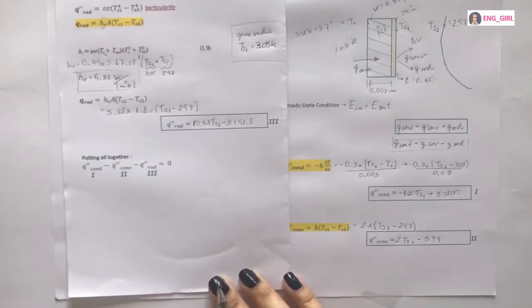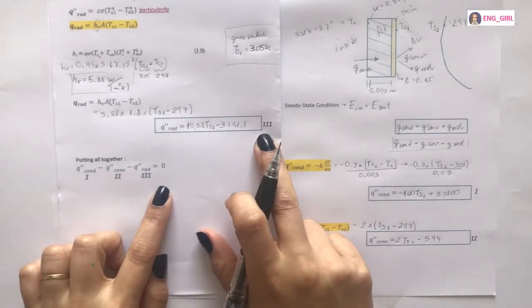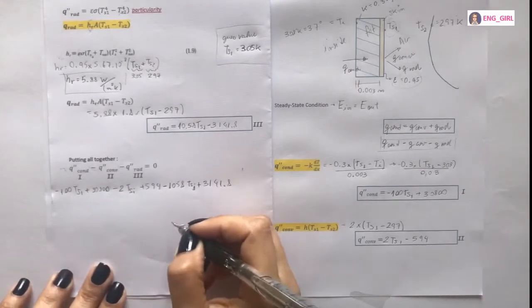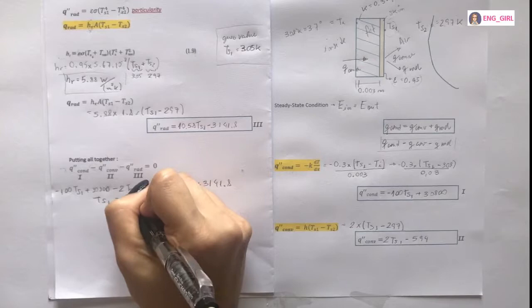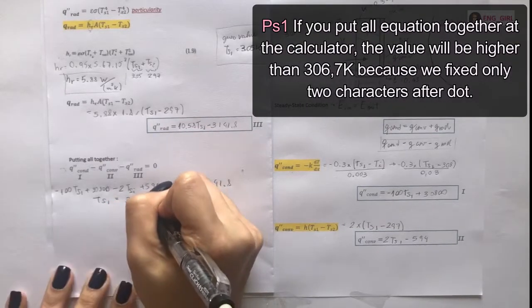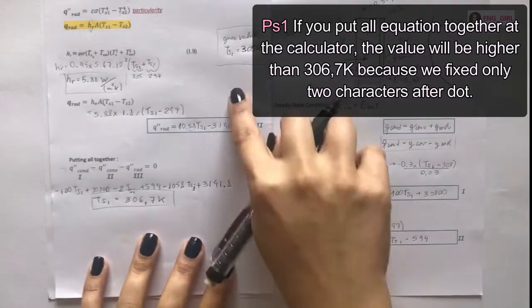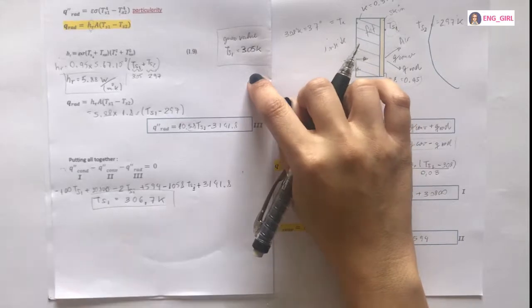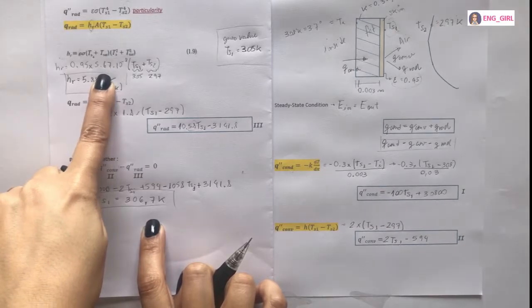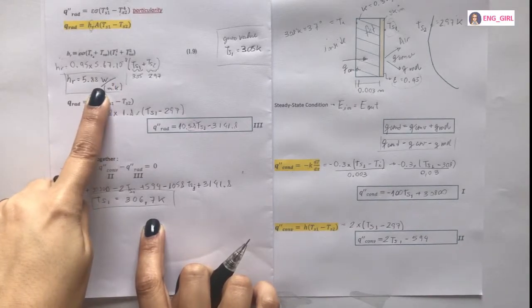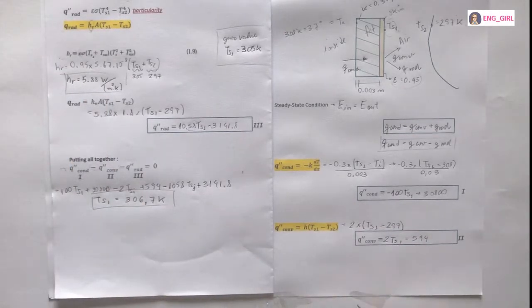And now what we have to do is put all together the first, second, and third equation. So TS1 will be 306.7 Kelvin. In order to verify the guess value, we can put the TS1 found in this equation. If you do that, you will find 5.93. It's similar, so it's correct.